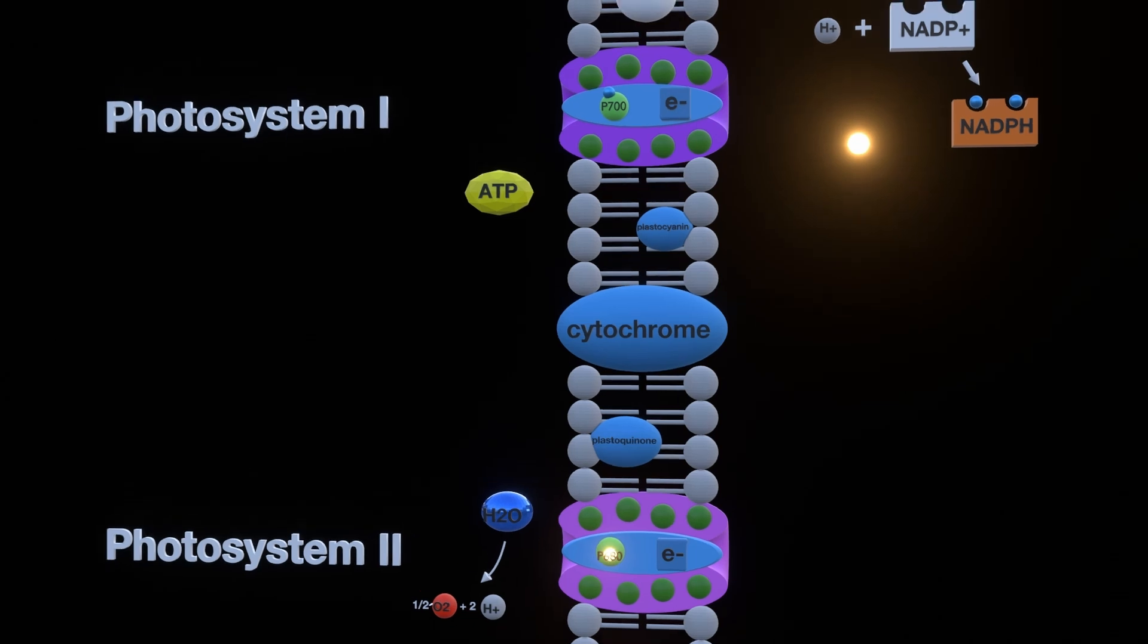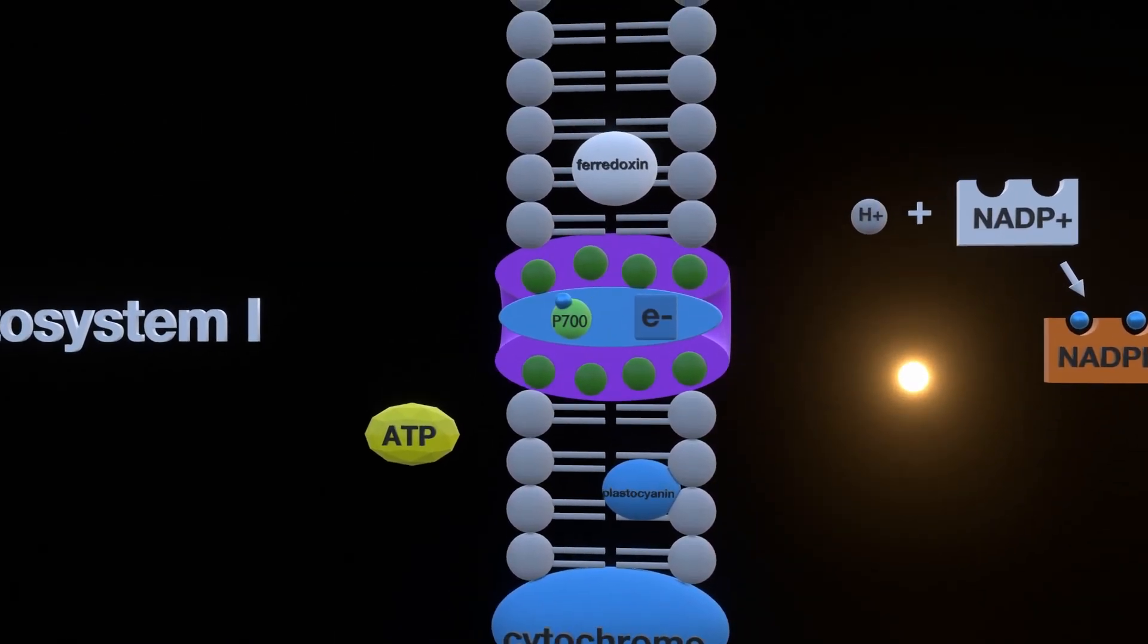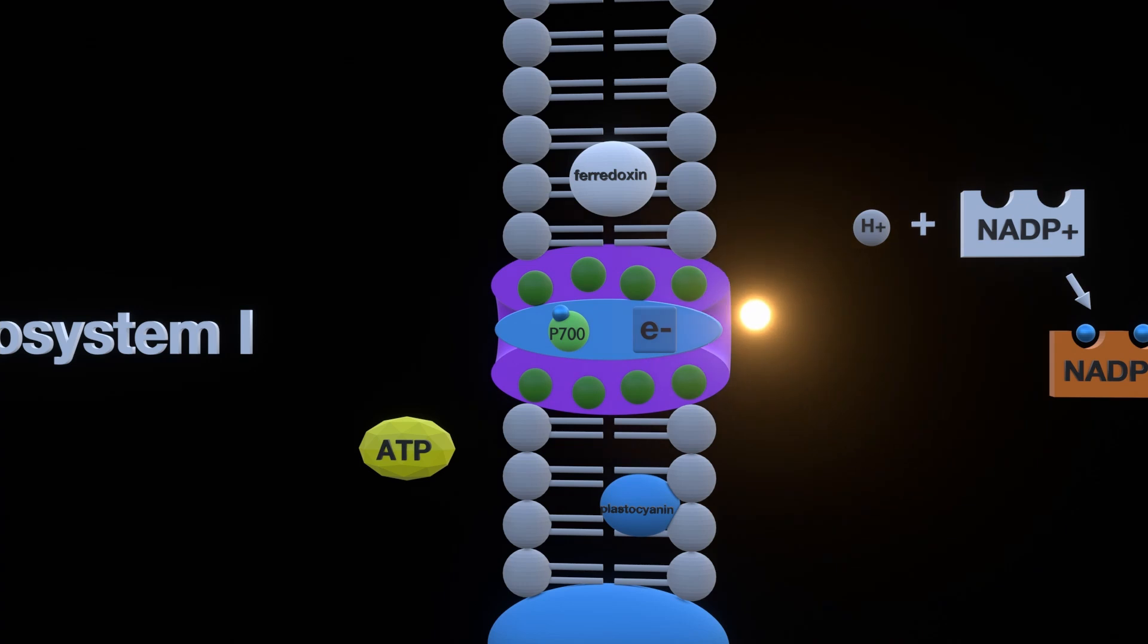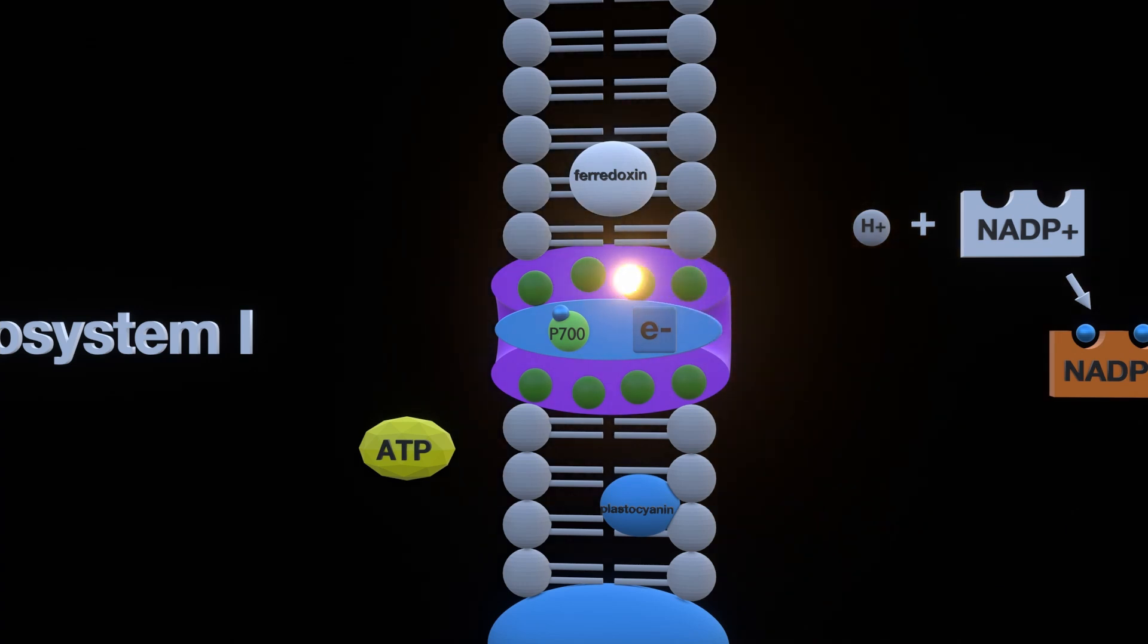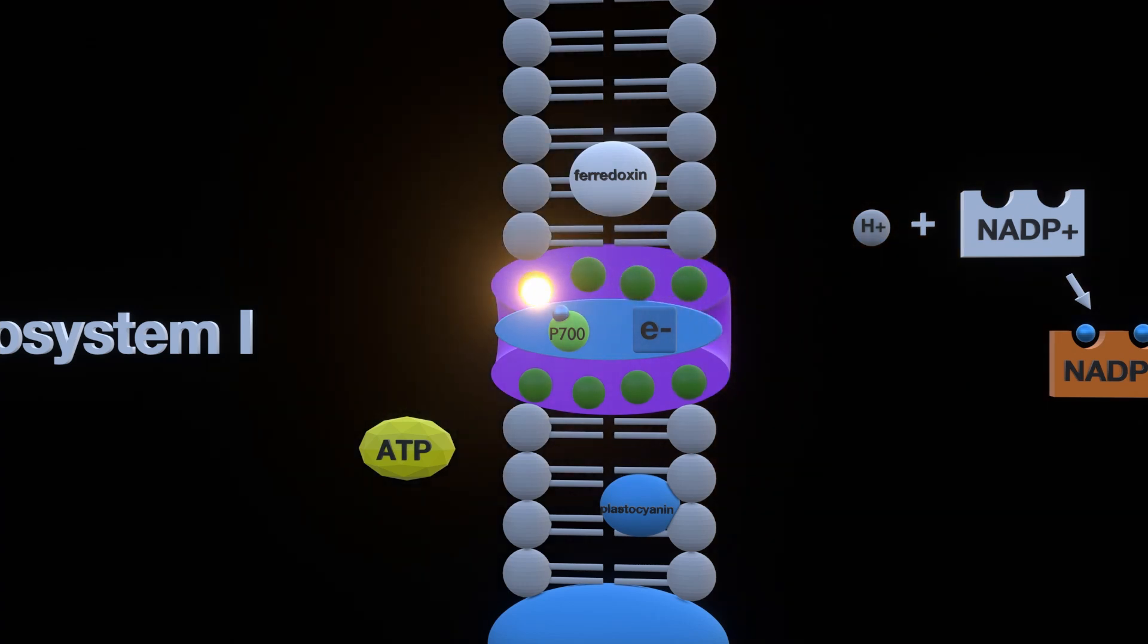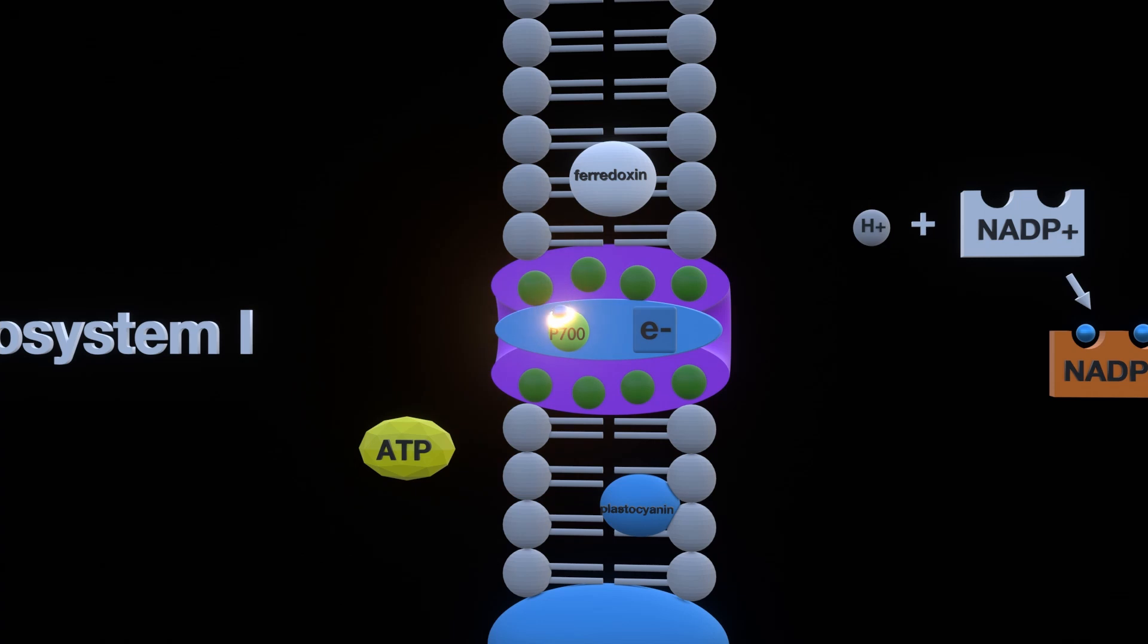Now that the electron has reached photosystem 1, once again a photon from for example the sun is absorbed by and bounces through the light harvesting complexes, and this time it ends up in the p700. p700, as you might have already guessed, absorbs light at 700 nanometers, which is far red light.